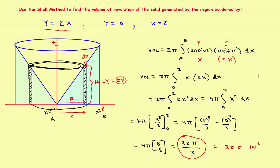So 32π/3 is the answer — about 35.5 cubic units on a calculator. The key is: if you're going around the y-axis, put the whole thing in terms of x. The hardest part is determining the radius and the height, and the only way to get those is to draw a picture and label them.